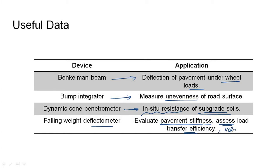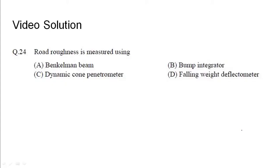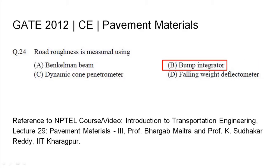Sometimes it is also used to check for voids in concrete. So as we saw, a bump integrator is used to measure the roughness or unevenness of the road surface. Therefore, road roughness is measured using a bump integrator — that is option B. The relevant NPT reference has been listed.